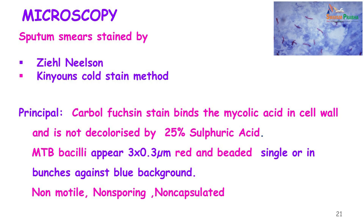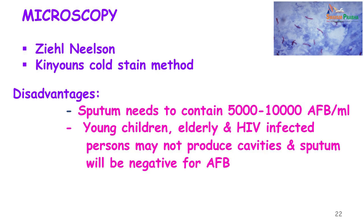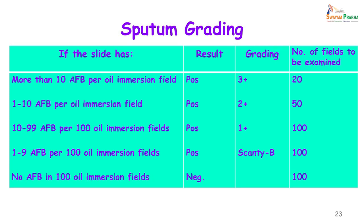The organism is non-motile, non-sporing, and non-capsulated. The disadvantage of microscopy is that you need at least 5,000 to 10,000 AFB per ml, and in children, the elderly, and HIV-infected patients the immune response may not be strong enough to see the bacilli. Microscopy can also produce subjective errors. Per RNTCP guidelines, we usually have to examine at least 100 fields under oil immersion, which can be very tedious.